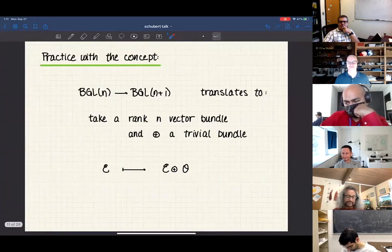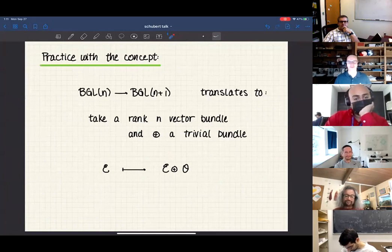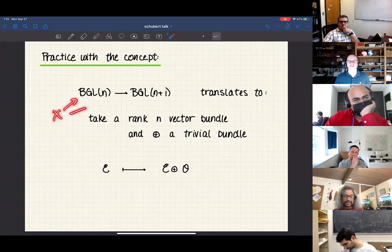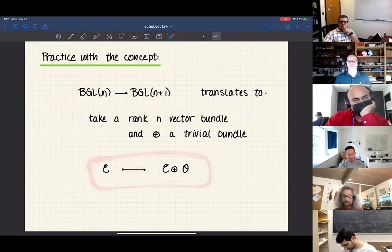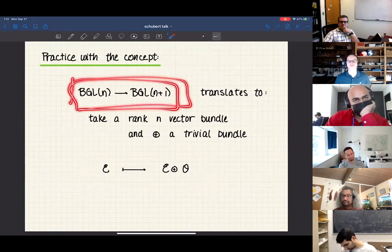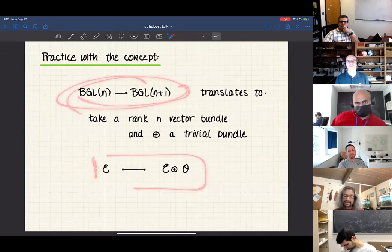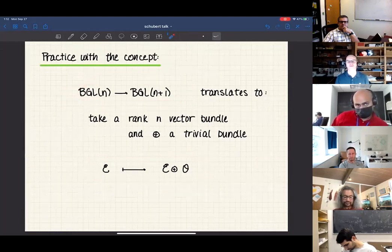Let me get some practice with the concept. Here's a map from BGLN to BGLN plus one. I'm going to take the map corresponding to: if I give you a vector bundle of rank N, I'm going to give you a recipe for a vector bundle of rank N plus one. My recipe is going to be add the trivial. This map is add trivial bundle of rank one.